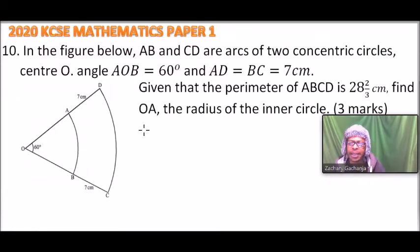This is question number 10. In the figure below, AB and CD are arcs of two concentric circles with center O. Angle AOB equals 60 degrees, and AD equals BC equals 7 centimeters. We have the figure here. Given that the perimeter of ABCD is 28⅔ centimeters, find OA, the radius of the small circle. So this is OA, the radius that we are looking for.